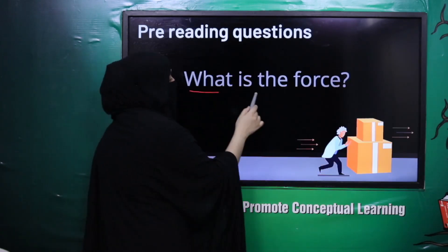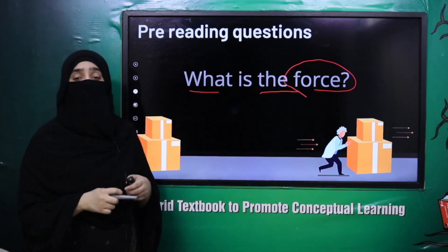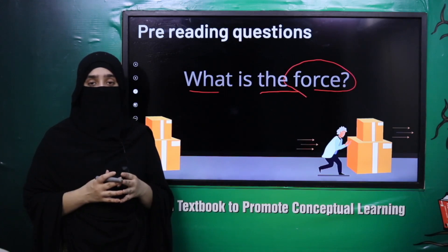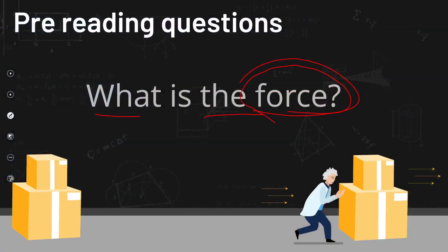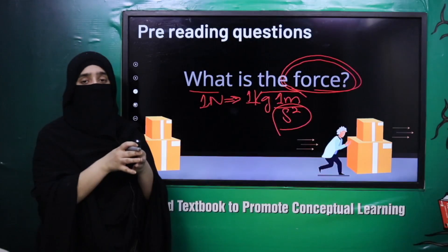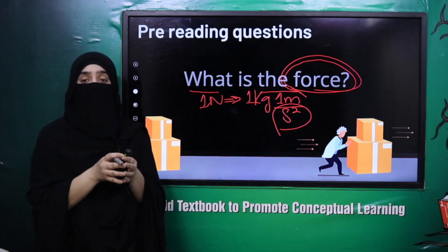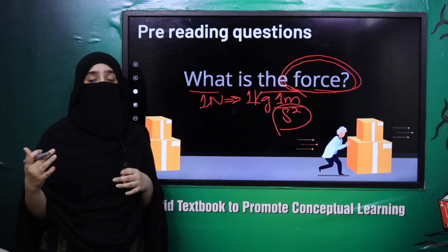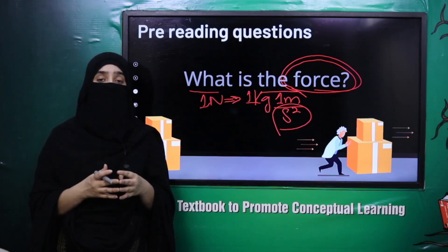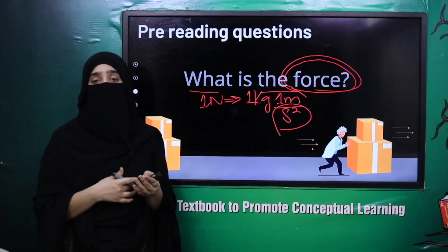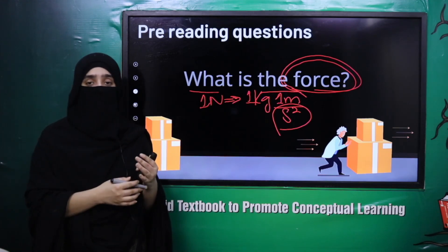Basically what is force? It is a pre-reading question for you. Force is the 1 Newton that is required to move an object of 1 kg for 1 meter in 1 second squared. So 1 Newton force jo hai wo required hoti hai ek object ko jiska mass 1 kg hai, usko 1 meter distance mein move karwane ke liye in 1 second squared. Force hai wo koi bhi push ya pull acting on an object jo uski movement ko start kare ya usko stop kare.